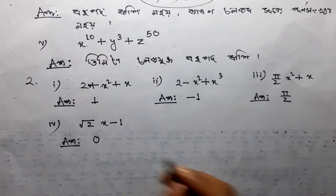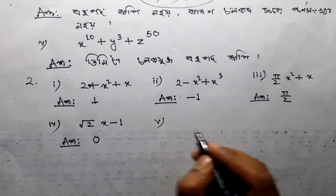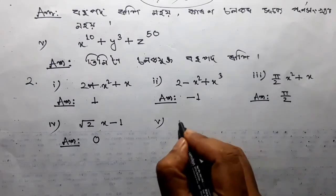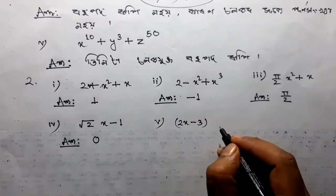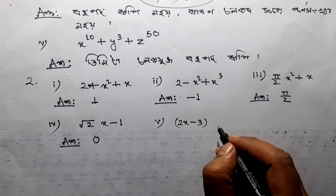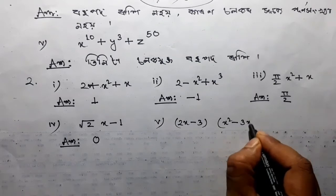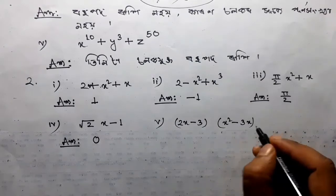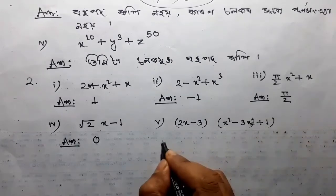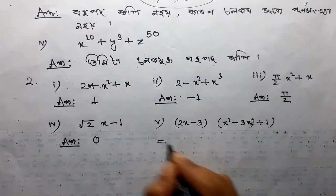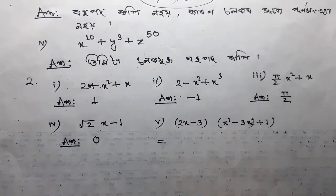Number 5: 2x minus 3, x squared minus 3x plus 1. So if I am going to write 2x squared, it will be 0.